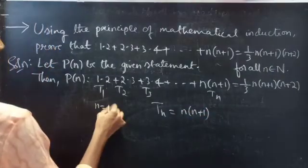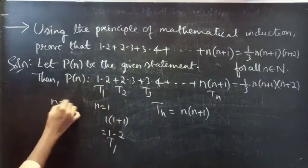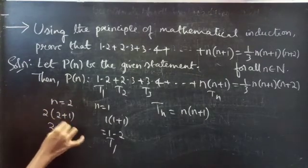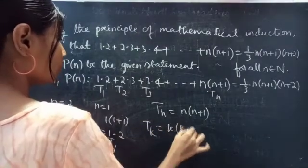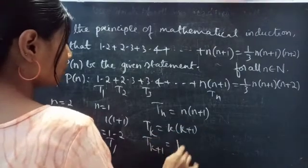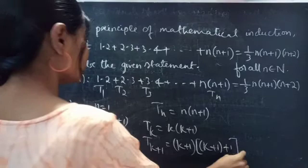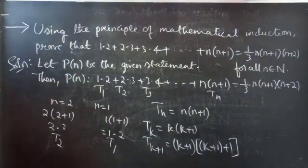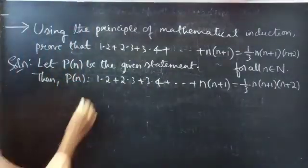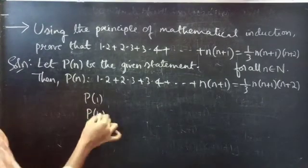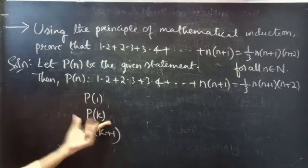If you put n=1, you get the first term; when n=2, you get the second term; when n=K, you get the Kth term; and when n=K+1, you get the (K+1)th term. Now we will show that the statement is true for n=1, assume it is true for some K belonging to natural numbers, and show it is true for n=K+1 using P(K).